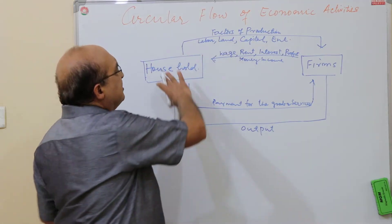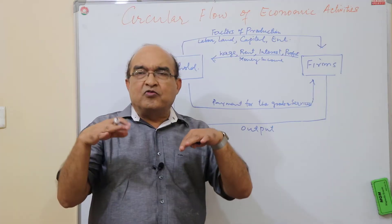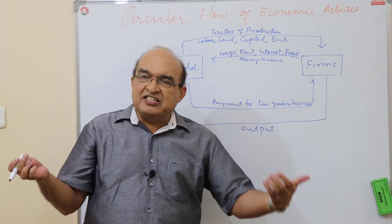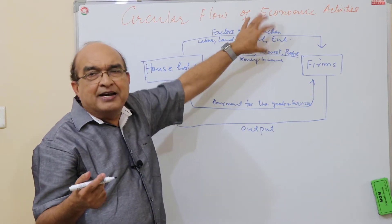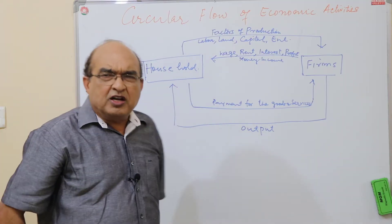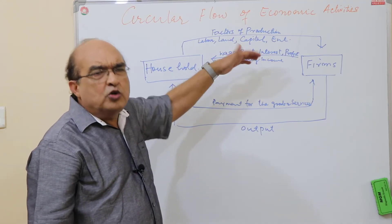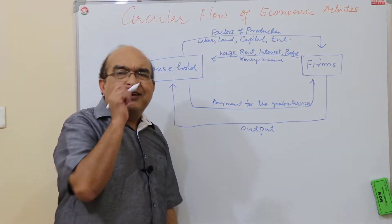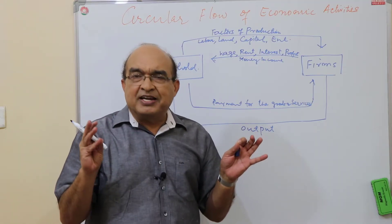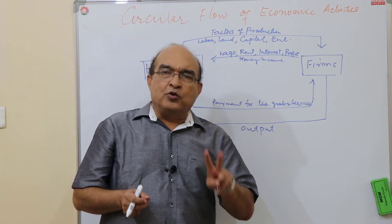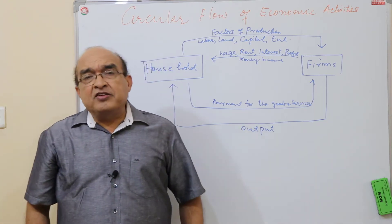It is worth noting that some factors might be supplied through institutions — for example, capital will be facilitated by financial institutions, so you can factor in the financial sector. For the sake of simplicity, I am not making the model complicated by adding that here. This is the simple model of the circular flow of economic activity, consisting of two kinds of flows: one is the real flow and the other is the monetary flow.